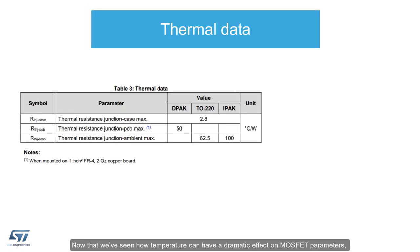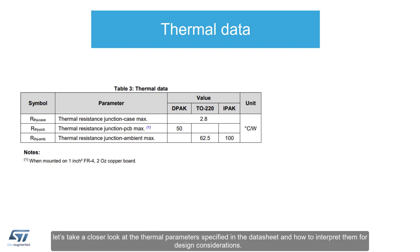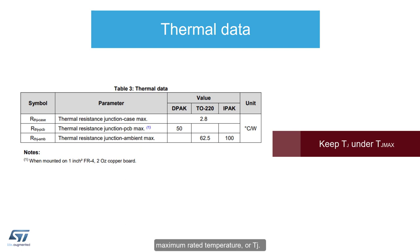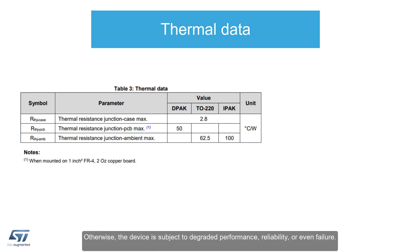Now that we've seen how temperature can have a dramatic effect on MOSFET parameters, let's take a closer look at the thermal parameters specified in the datasheet and how to interpret them for design considerations. In all instances, these resistances are used for design considerations to keep the internal silicon junction below its absolute maximum rated temperature, or TJ. Otherwise, the device is subject to degraded performance, reliability, or even failure.